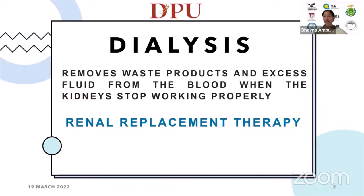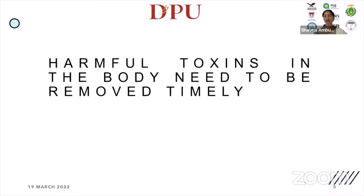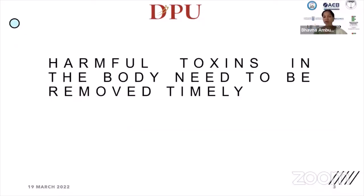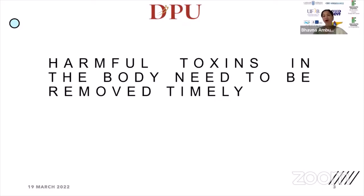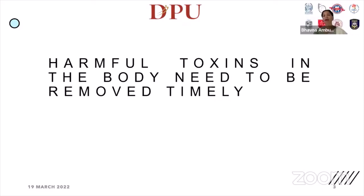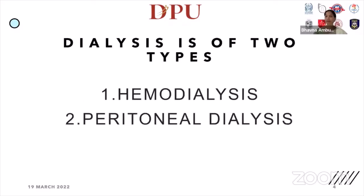Dialysis is typically called renal replacement therapy. The purpose is that harmful toxins in the body need to be removed in a timely manner; otherwise they create a hazard or undesired impact on the human body. To date, this is done with two types of dialysis.